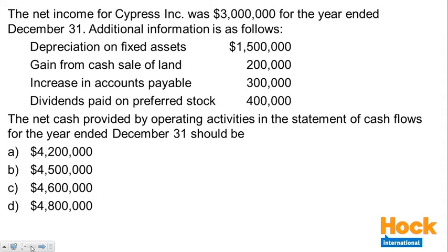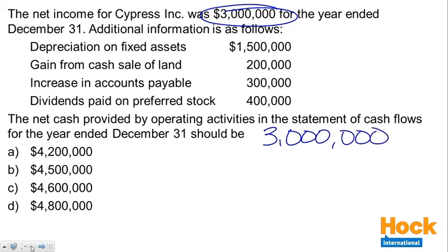The question is: the net cash provided by operating activities in the statement of cash flows for the year ended December 31st should be how much? We're doing the indirect method here. We're going to start with our net income of $3 million and make adjustments for things that are cash items not included in net income, or items included in net income that are not cash items, in order to convert net income into cash flows from operating activities. We start with our $3 million and go through each of the four items to determine if an adjustment is needed.